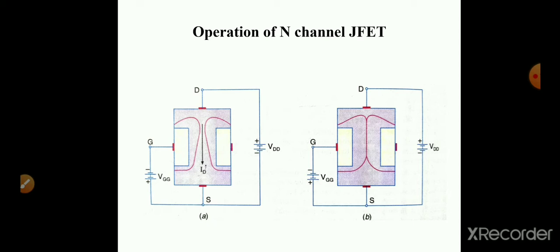For the normal operation of a junction field effect transistor, its gate terminal must be reverse biased. Two figures are shown. The first one has the gate-source terminal reverse biased and the drain-source terminal also reverse biased. When reverse bias is applied to the drain-source terminal and VGG (the gate-source voltage) is zero, drain current starts to flow from drain to source terminal, as shown in figure A.